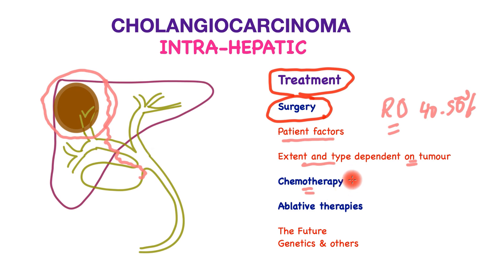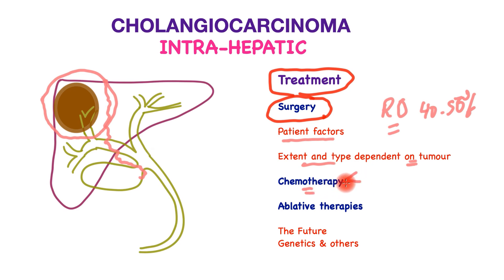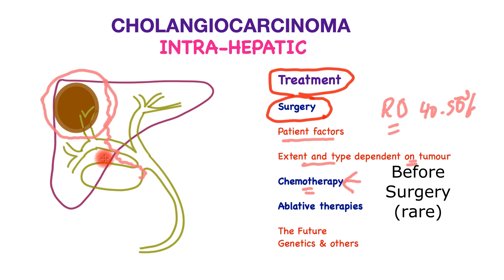Chemotherapy is deployed in three scenarios. It is considered for patients who are not candidates for surgery because of disease spread, in a palliative context. It is deployed for patients who have had surgical excision to reduce the risk of the tumor coming back, known as adjuvant chemotherapy. Or it may be deployed before surgery for tumors that are too large, to try and contain the tumor and reduce spread of the cancer outside of the liver, offering the best outcome when surgery is undertaken.